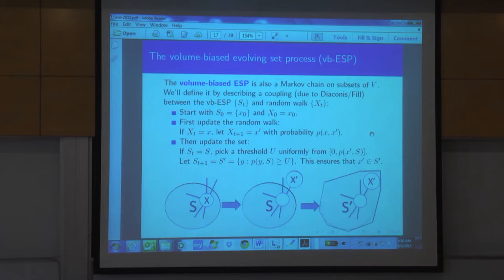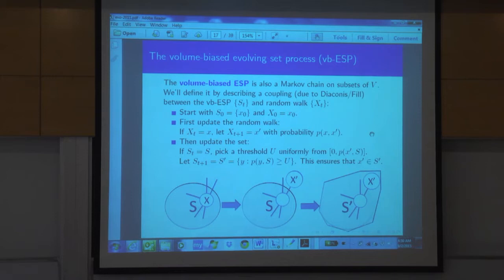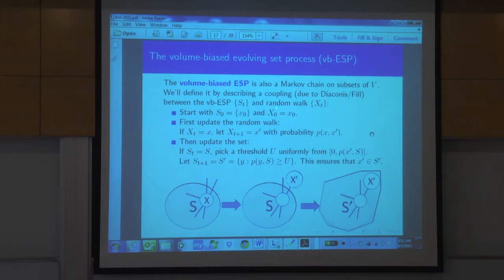Because this process is a martingale, if we start it at a singleton, it's very likely to disappear and get absorbed at the empty set very soon. So we want to condition it to be absorbed in the whole space rather than in the empty set. This type of conditioning is well known in probability — it's known as a Doob h-transform. If you have a Markov chain that can be absorbed in several states and you condition it to be absorbed in one, this gives a new Markov chain, and we know how to modify the transition probabilities accordingly.